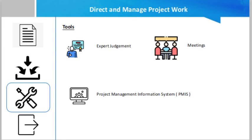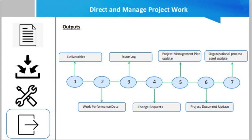The tools for this process include expert judgment, meetings, and the Project Management Information System (PMIS). The outputs of the Direct and Manage Project Work process are: deliverables — any unique and verifiable product, result, or capability to perform a service required to complete a process, phase, or project; work performance data, which is the raw observations and measurements identified during activities being performed to carry out the project work; the issue log; change requests; project management plan updates; project document updates; and organizational process asset updates.